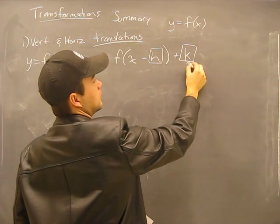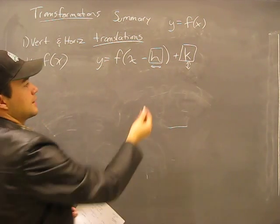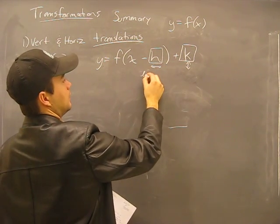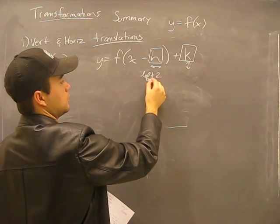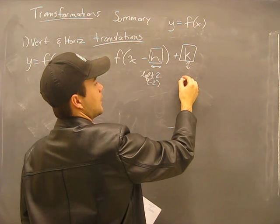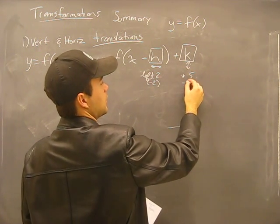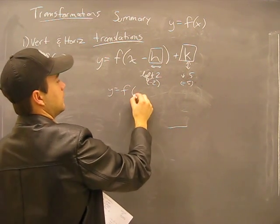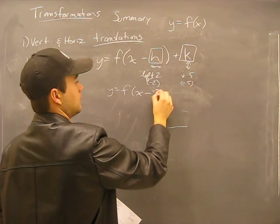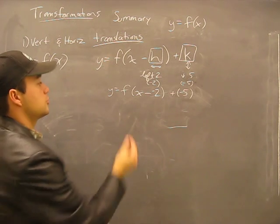This of course is our up-down, and this is our left-to-right. So for example, translating it left 2, that's minus 2, and translating it down 5, which is minus 5, would make this function look like y equals f of x minus negative 2 plus negative 5.